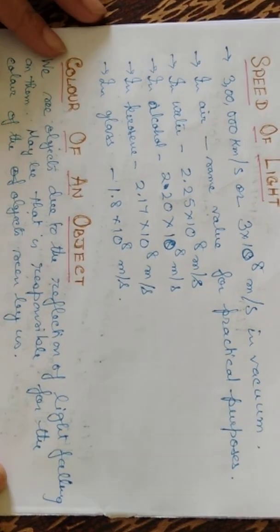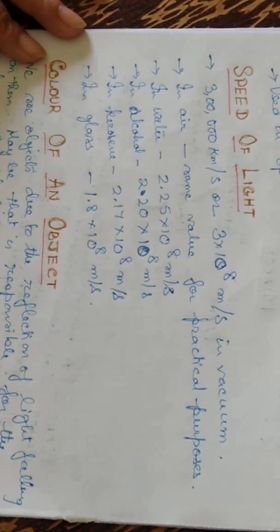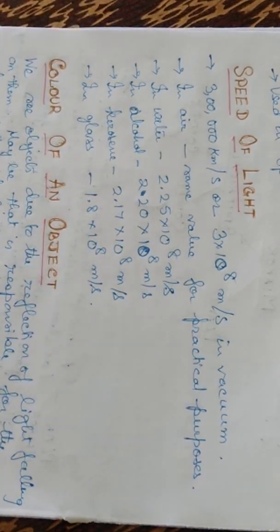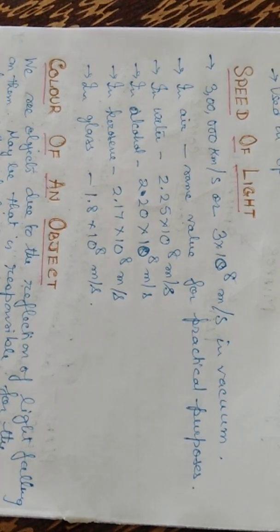What is the speed of light? The speed of light is 3 lakh kilometers per second, or 3 × 10⁸ meters per second in vacuum — that is the maximum speed of light. In air, the same value is considered for practical purposes. In water, it is 2.25 × 10⁸ m/s. In alcohol, it is 2.20 × 10⁸ m/s. In kerosene, it is 2.17 × 10⁸ m/s. And in glass, it is 1.8 × 10⁸ m/s.